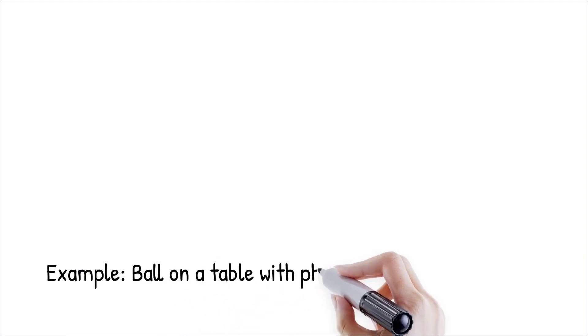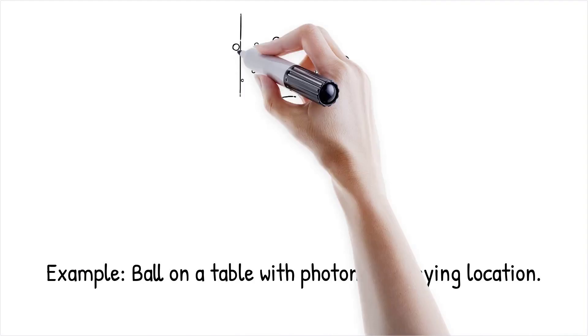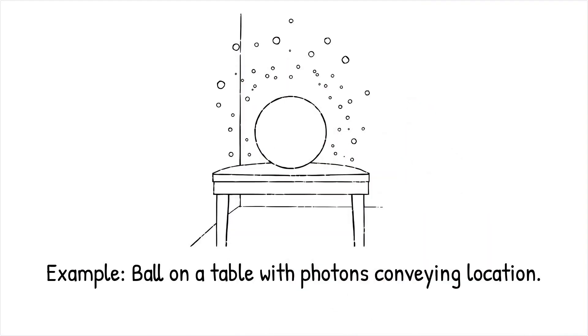Example: If a ball rests on a table, photons reflected from its surface scatter throughout the room, carrying information about the ball's location. This information is encoded in the environment—air molecules, photons, etc.—allowing all observers in the room to perceive the same reality.